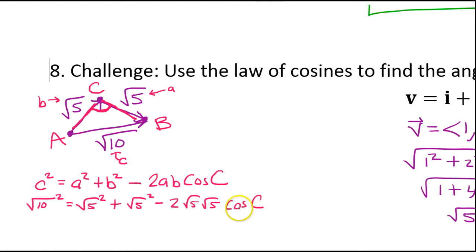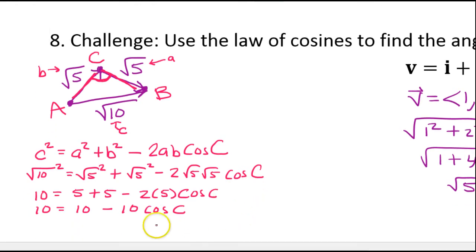So angle c is the only variable. Now when you square a radical, the radical goes away. So this is going to become 10 = 5 + 5 - 2 times 5. √5 times √5 is just 5, and then cos(c). So this is going to give me 10 = 10 - 10 cos(c), just combining like terms here.